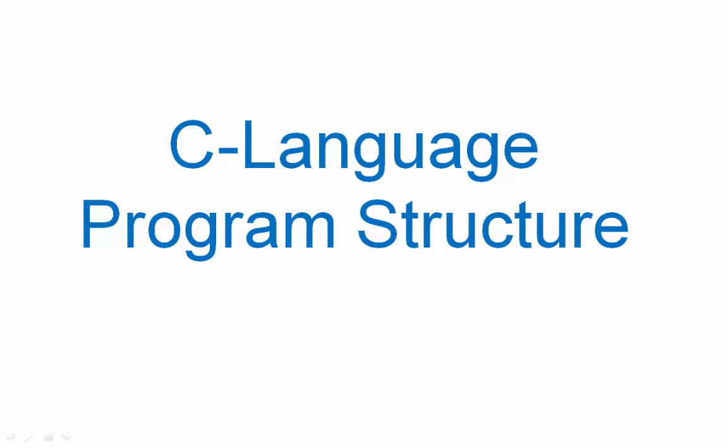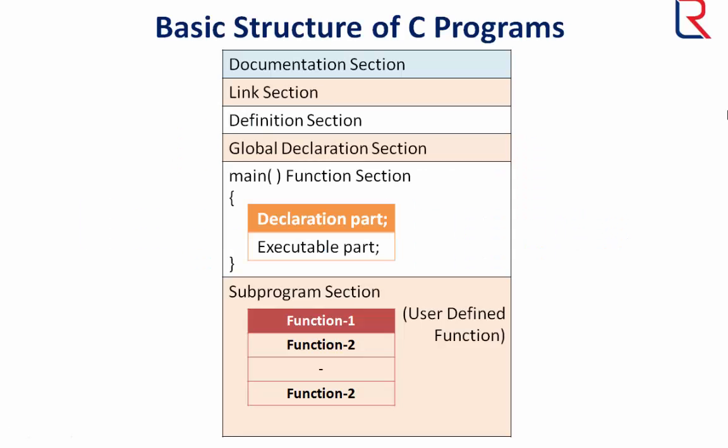Hello viewers, welcome to Learners Region. In this video we are going to discuss the basic structure of C language programs. So let's start. This is the basic program structure as per ANSI standard. There are six sections in this structure.